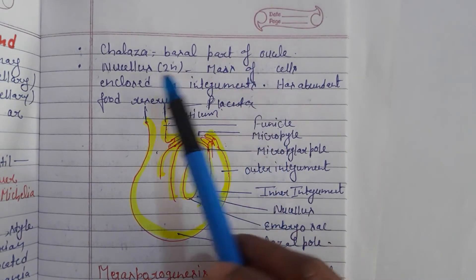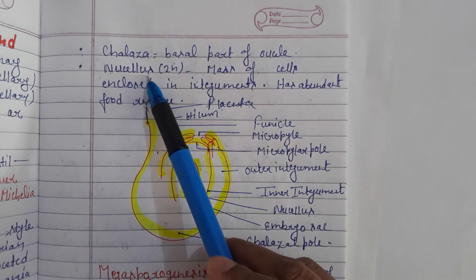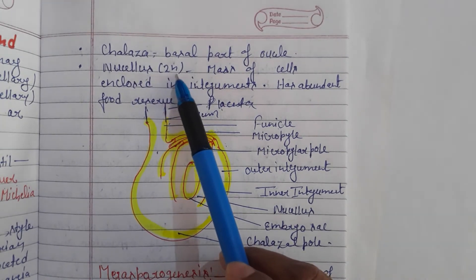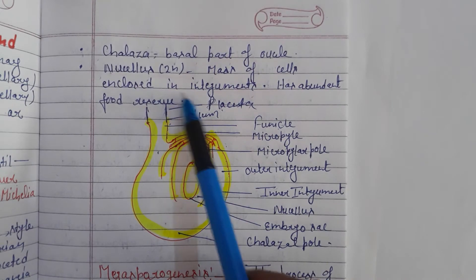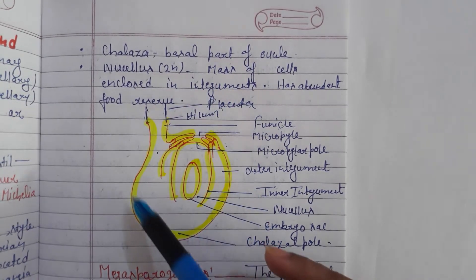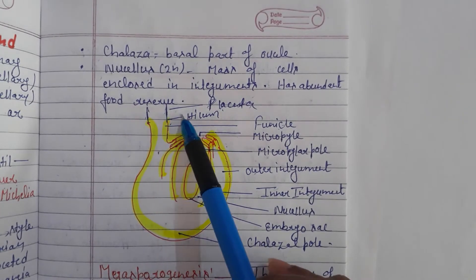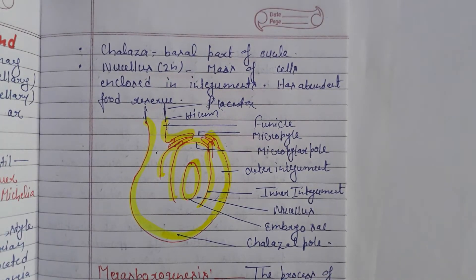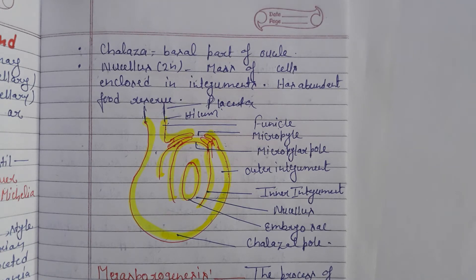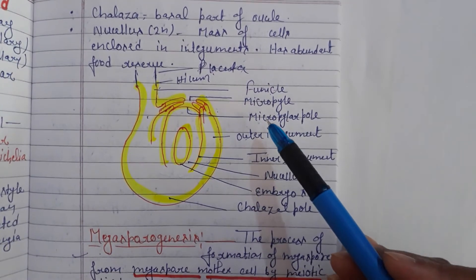The nucellus is a 2N diploid mass of cells enclosed within the integument. The nucellus has an abundant food reserve and is actually involved in endosperm formation — providing nutritive material for the developing embryo inside the ovule.